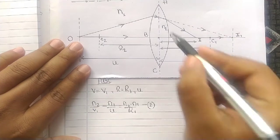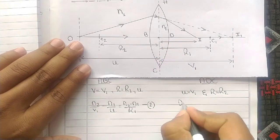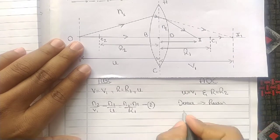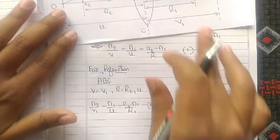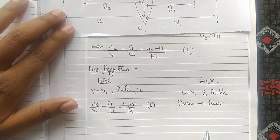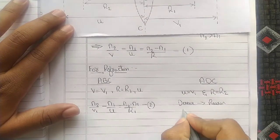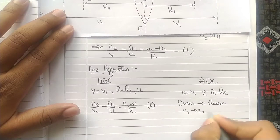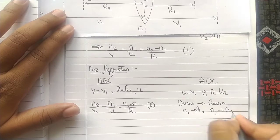But in our second case, the ray is passing from denser to rarer medium. So, what we are supposed to do is interchange the terms N1 and N2 in the main equation. Take N1 as N2 and N2 as N1.